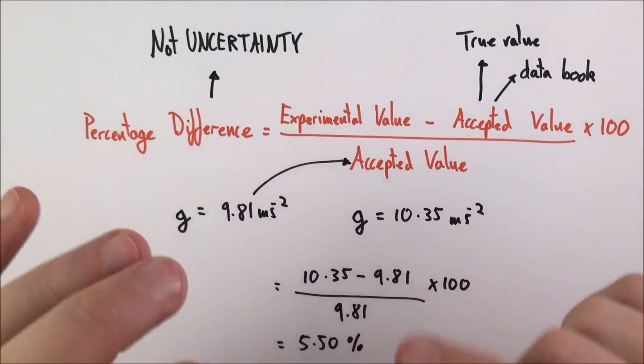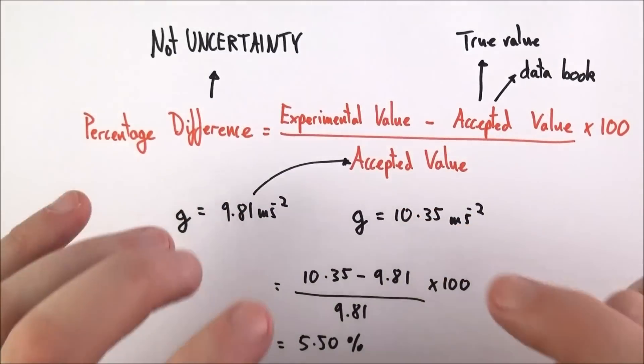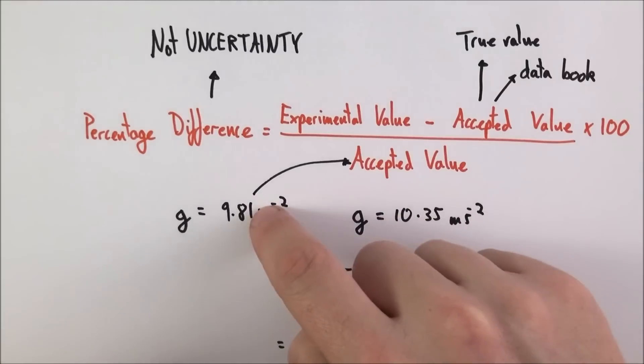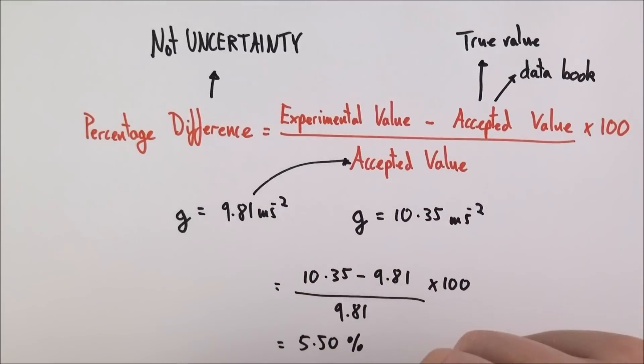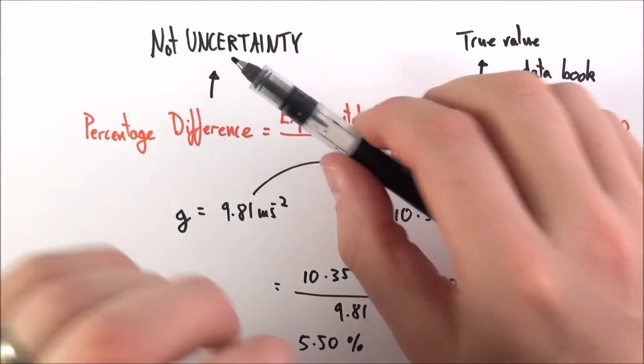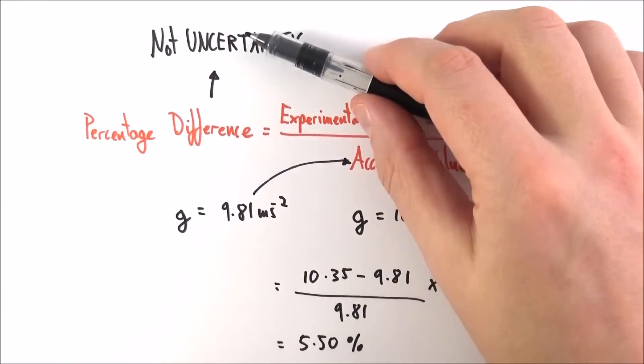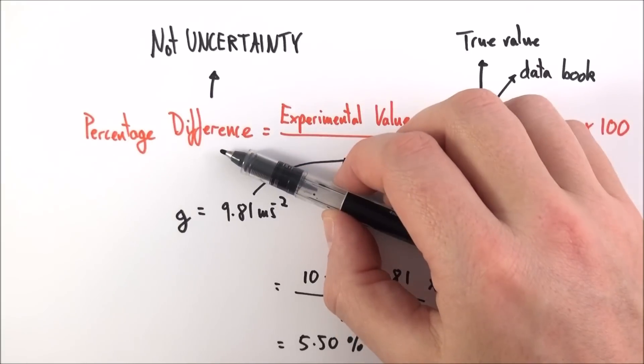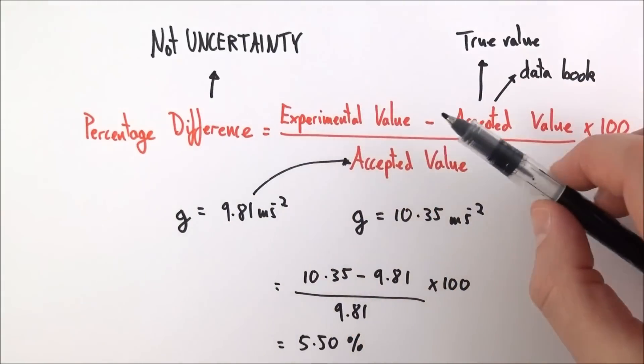This gives us an estimation of how accurate our experiment might be. Remember, the closer your value to the true value, the more accurate your experiment. But just to stress once again, this is not uncertainty. This is not about your measured value and how uncertain you are. This is about the percentage difference between your value and the true value.